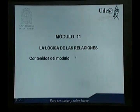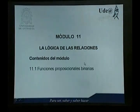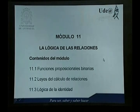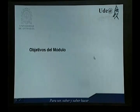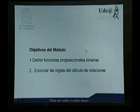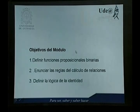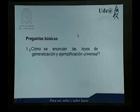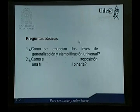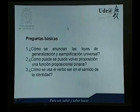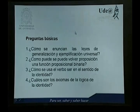Vamos a ver lo que es la Lógica de las Relaciones y los contenidos de este módulo. Se verán las funciones proposicionales binarias, las leyes del cálculo de relaciones, y en qué consiste la Lógica de la Identidad. Entre los objetivos del módulo: definir qué es función proposicional binaria, enunciar las reglas del cálculo de relaciones, y definir la Lógica de la Identidad. Las preguntas básicas que debe responder un estudiante al terminar este módulo serían: ¿cómo se enuncian las leyes de generalización y ejemplificación universal?, ¿cómo se puede volver proposición una función proposicional binaria?, ¿cómo se usa el verbo ser en el sentido de la identidad?, y ¿cuáles son los axiomas de la Lógica de la Identidad?